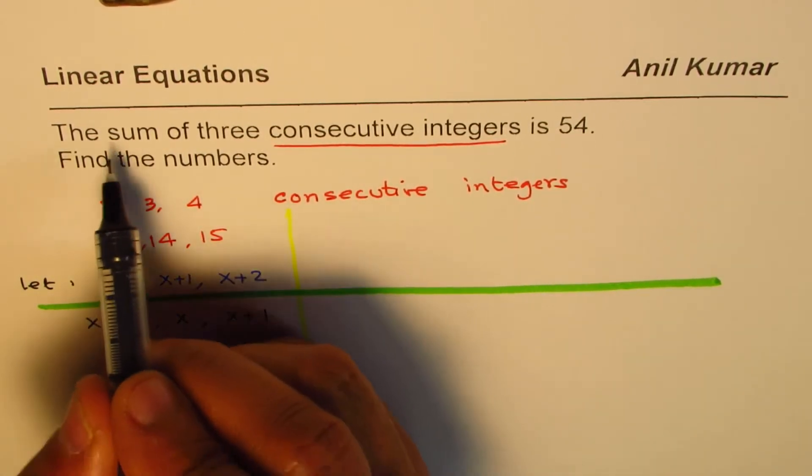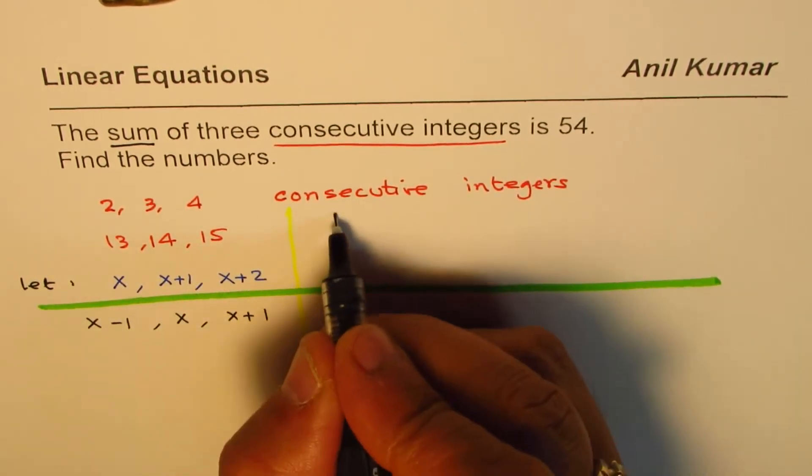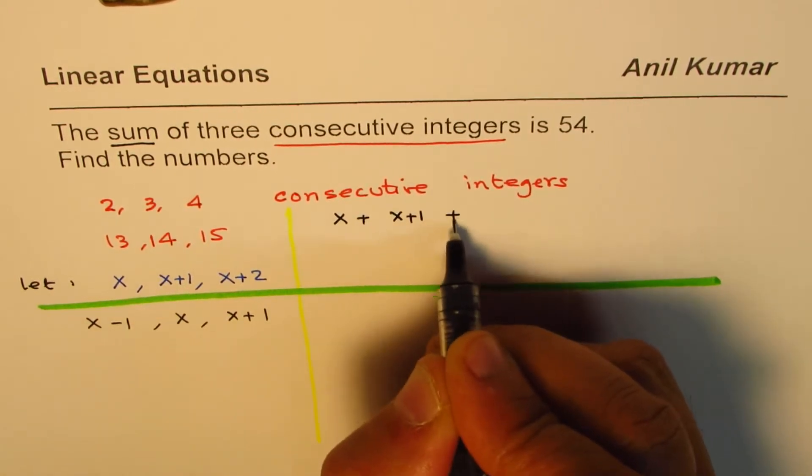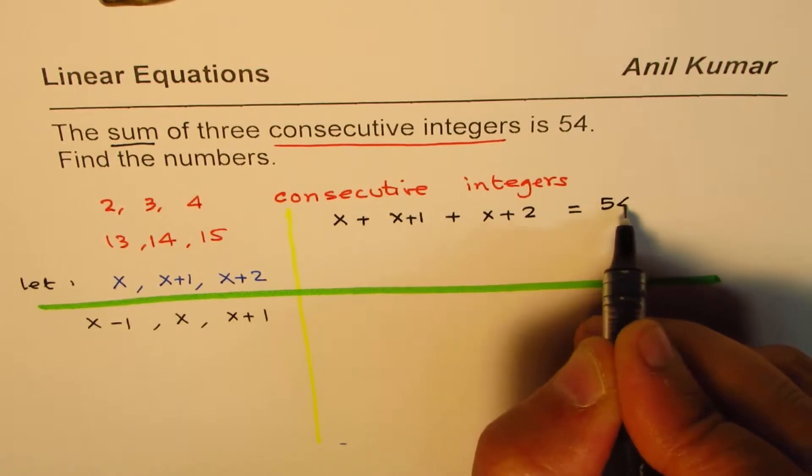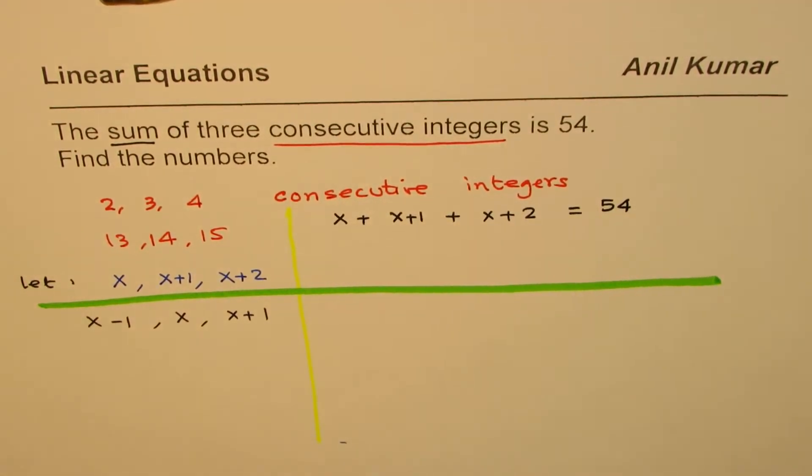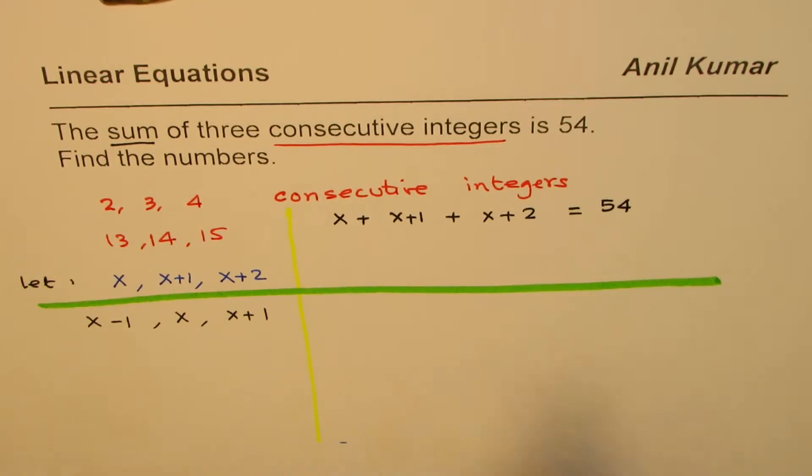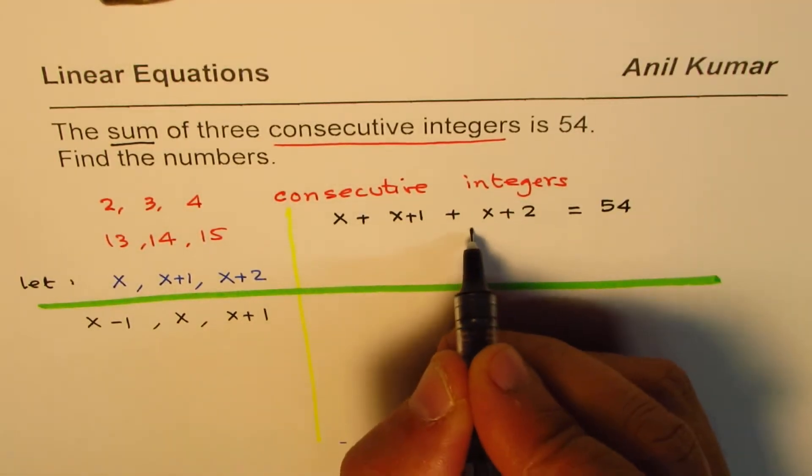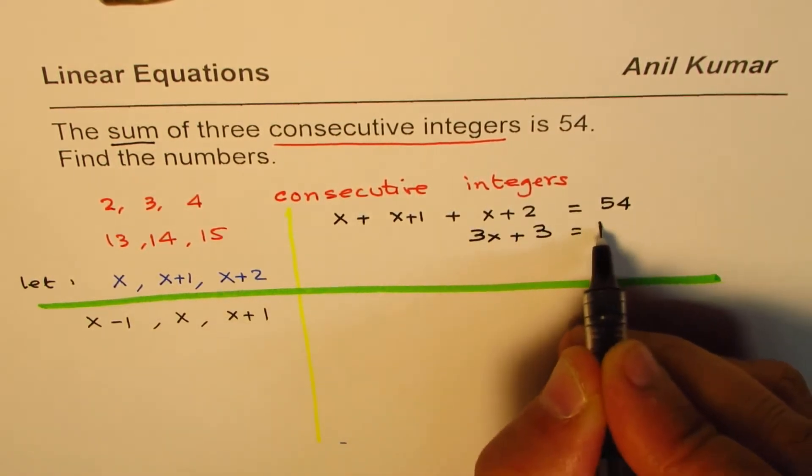And we are given sum of the three is 54. So, if I add these three, that is to say x plus, the other one is x plus 1 plus x plus 2, I should get 54. So, now we have a linear equation with x as my unknown. I need to just find x. Let's add it up. There are three x's here. So, we have 3x plus 2 plus 1 is 3. That is 54.